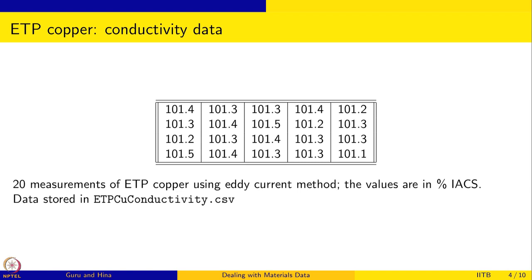The first measurement is 101.4, the second is 101.3, the third is 101.3, and so on. These measurements are made on different parts of a sample — sometimes you can even give a schematic of the sample and locate where each measurement was made. All measurements are made on the same piece of copper. As usual, we want to store this data as a CSV file called ETP copper conductivity.CSV, which we will use for R programming.